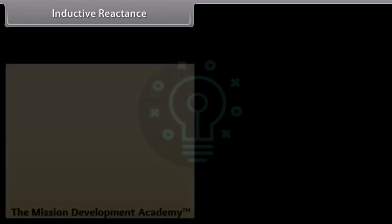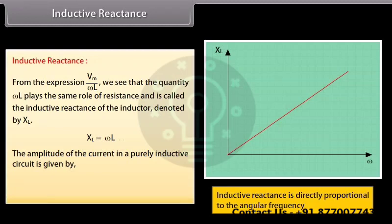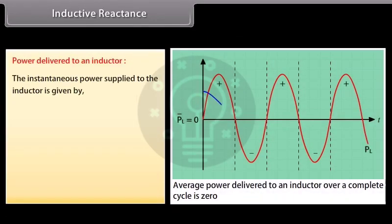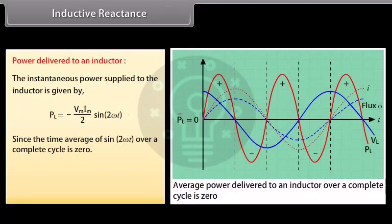Inductive reactance: from the expression Im = Vm / (ωL), the quantity ωL plays the same role as resistance and is called the inductive reactance, denoted XL = ωL. The amplitude of current in a purely inductive circuit is Im = Vm / XL. The instantaneous power supplied to the inductor is −(Vm Im / 2) sin(2ωt). Since the time average of sin(2ωt) over a complete cycle is zero, the average power delivered to an inductor is zero.